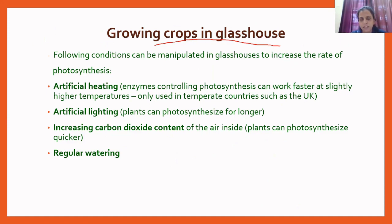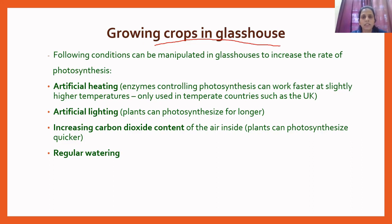Another fact is that these environmental conditions cannot be controlled by human beings. These conditions include the amount of light available to the plant for the process of photosynthesis, availability of raw materials that is carbon dioxide and water, and the temperature of the surrounding of the plant.